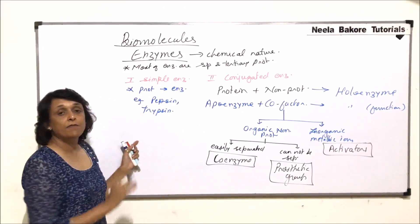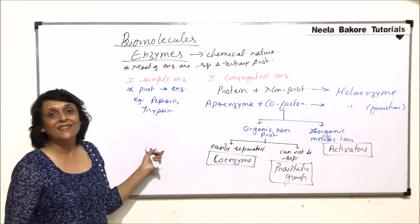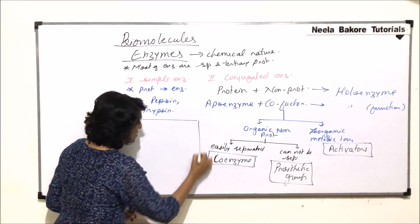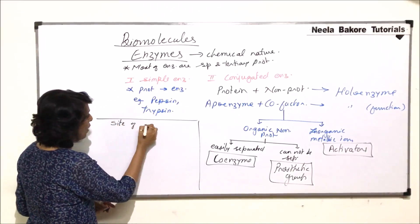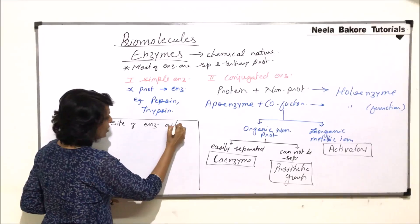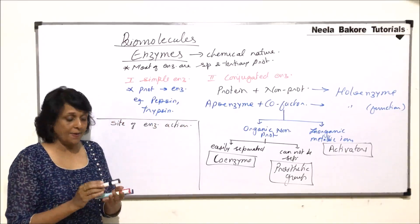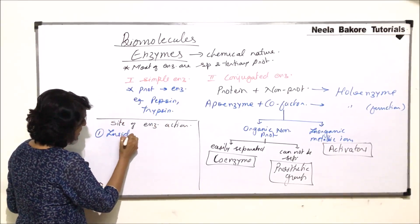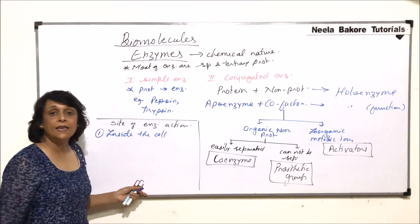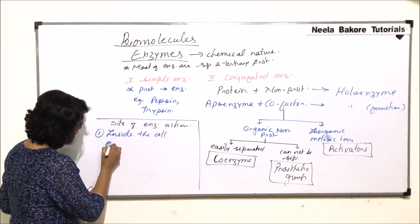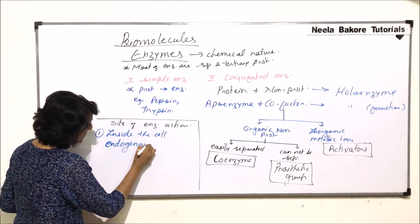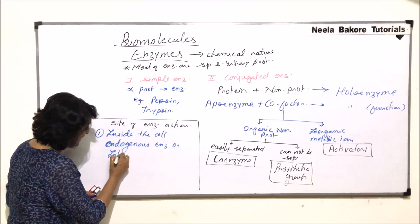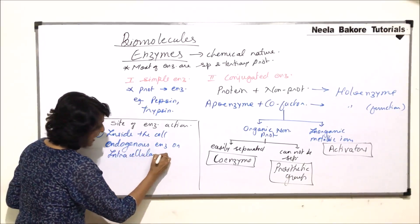We will also talk about the types of enzymes based on their site of action — where do enzymes work. If the enzyme is working inside the cell, such enzymes are known as endogenous enzymes, also called intracellular enzymes.